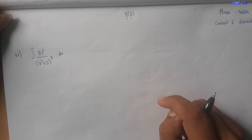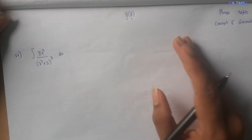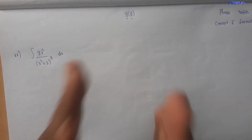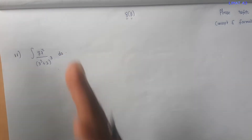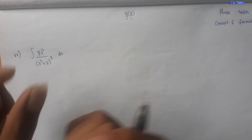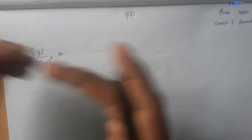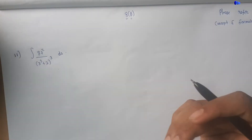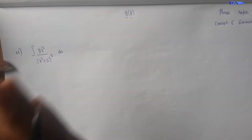Welcome to CA Thumban Channel, CA Foundation Business Math. In this video, we will see Sum number 11, which is the integral Sum number 10, problem 8B. So what do we see in this video? Sum number 11.